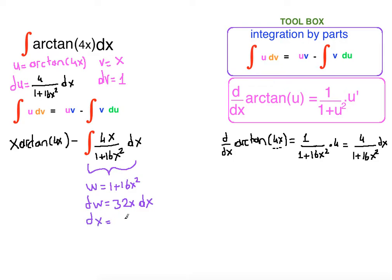So let's place them. We have x arctangent of 4x minus integral of 4x over w. Instead of 1 plus 16x squared, we're going to write w because we defined it w. Times, instead of dx, we're going to use dw over 32x.